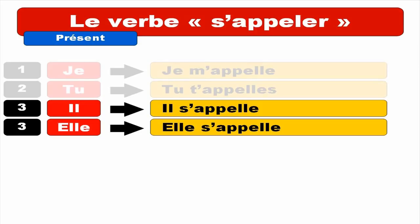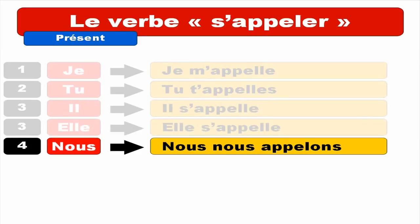And then for NOUS — some students find it a bit strange, but for these verbes pronominaux you've got to repeat NOUS again. So you get NOUS NOUS APPELONS. Keep in mind that for this form you've got only one L. NOUS NOUS APPELONS. Repeat. NOUS NOUS APPELONS. So the pronunciation is a bit different — it's APPELONS because there is only one L.